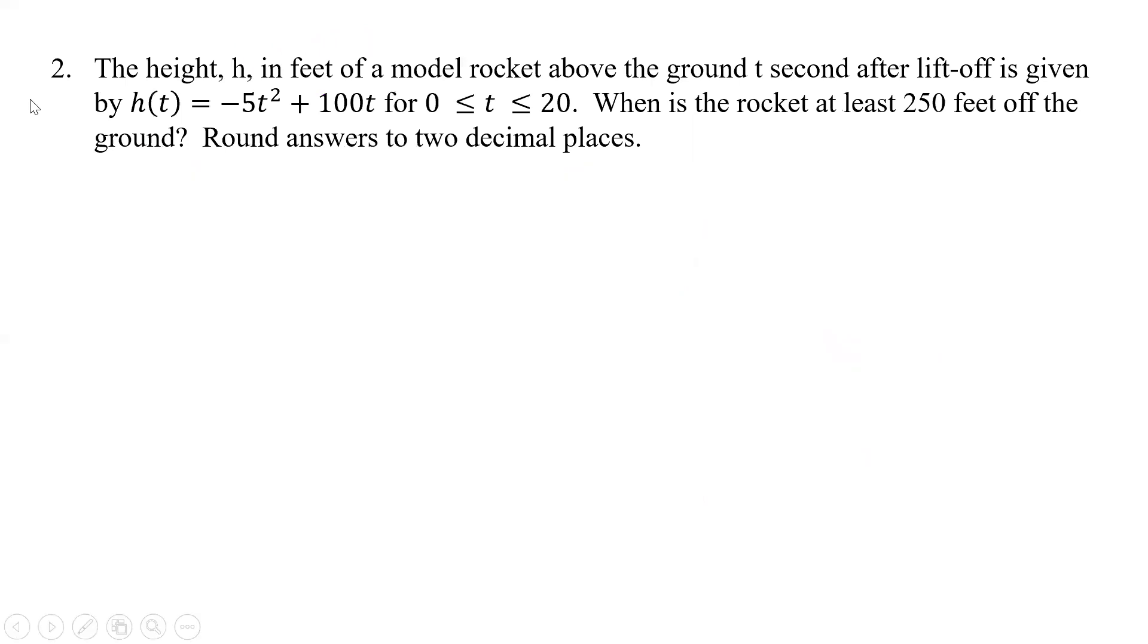Alright, what about a height one? We have a rocket. So it's going to be the same kind of thing. Think about a rocket. What does it do? It launches, it goes up, and it comes back down, and it's a quadratic. And so we have this quadratic is going to be representative of our launch here. And so our height h in feet of a model rocket above the ground t seconds after liftoff is given by h(t) equals negative 5t squared plus 100t for t between 0 and 20.